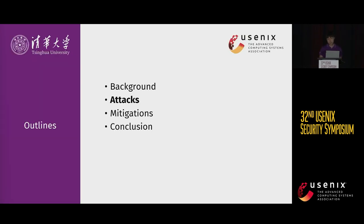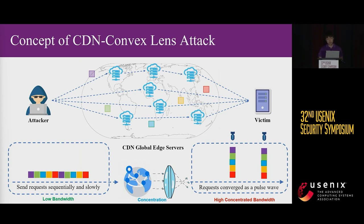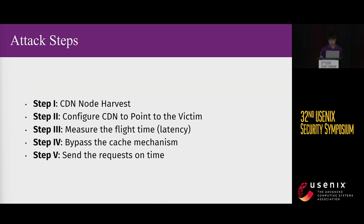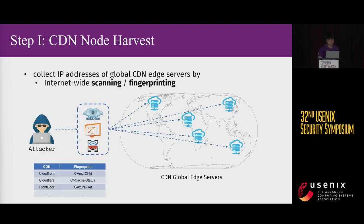Now let's dive into the details. As shown in the figure, the attacker precisely controls the timing of HTTP requests sent to the different CDN edge servers, causing these requests to converge at the origin server simultaneously, generating a pulse wave on the origin server side. I will introduce the five specific steps of this attack. First, the attacker needs to scan or fingerprint the internet to collect the IP set of CDN edge servers.